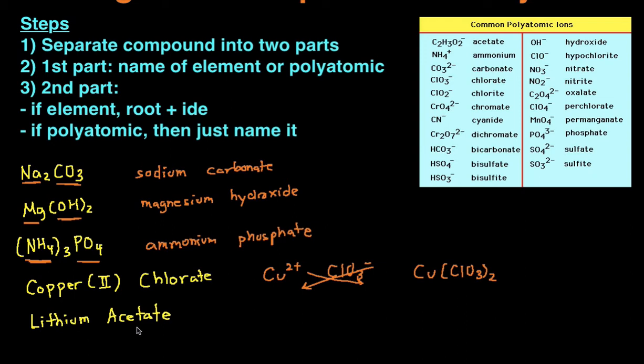And last example, lithium acetate. So lithium is Li, and because it's in the first column of the periodic table, it's going to be a positive one charge. And then acetate is this polyatomic ion right here, C2H3O2. And then this has a negative one charge, so double check if those charges cancel out, and they do, because positive one and negative one cancel out, making the compound overall neutral. Then it's going to be LiC2H3O2, and that's the formula for lithium acetate.